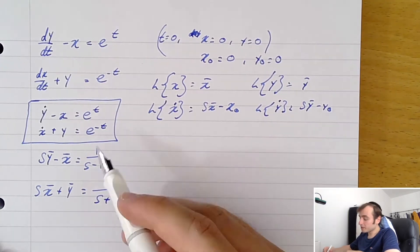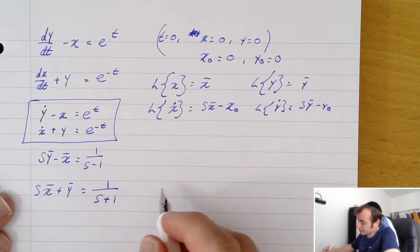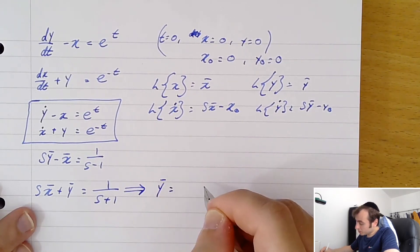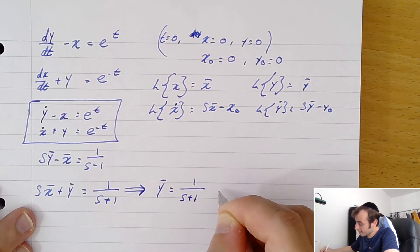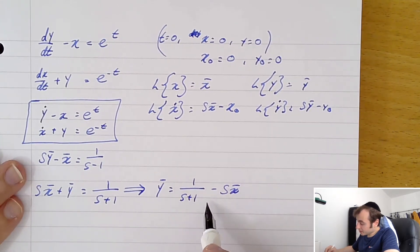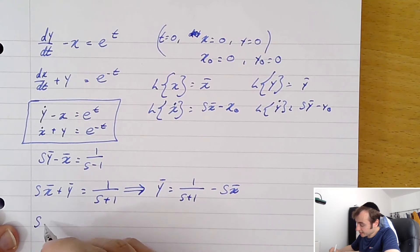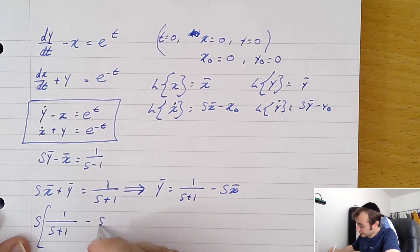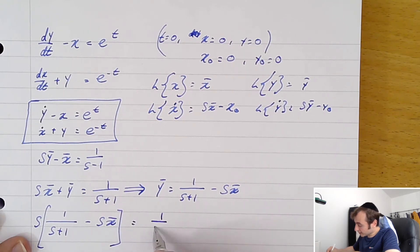This is straightforward — we substitute one variable for the other and solve. From the second equation, y-bar equals 1/(s+1) minus s·x-bar. Substituting that back into the first equation gives s times [1/(s+1) minus s·x-bar] minus x-bar equals 1/(s−1), which simplifies to s/(s+1) minus s²·x-bar minus x-bar equals 1/(s−1).